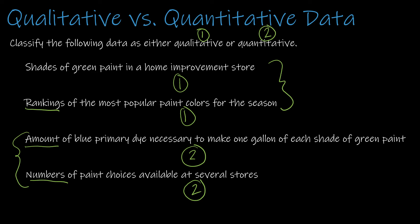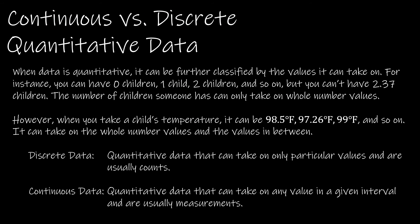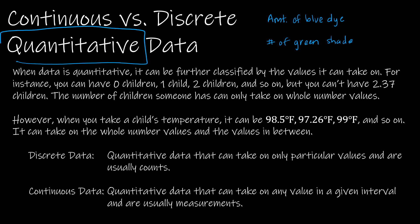We're now going to take a closer look at quantitative data. Quantitative data can be further classified as either continuous or discrete. We just looked at an example: the amount of blue dye required to make different shades of green, and the number of green shades available. Both are quantitative, but the difference between these two is that one is continuous and one is discrete.